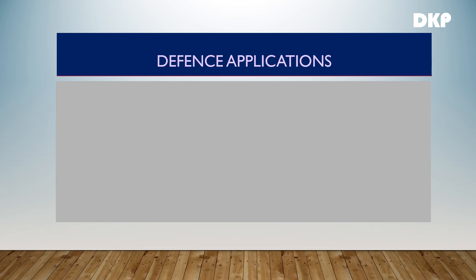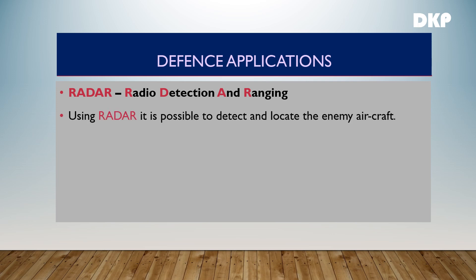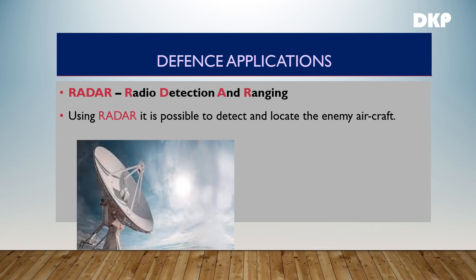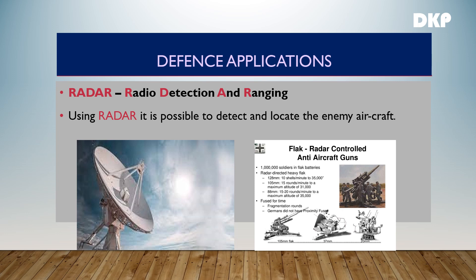Coming to the defense applications — radar is mainly invented for defense applications. The full form of radar is Radio Detection And Ranging. Radar can be used to detect and locate enemy aircraft: the radar sends a signal to the enemy aircraft, and the aircraft sends an echo signal back to the radar, detecting its presence and location. The radar and aircraft guns can be linked by an automatic control system to form a single unit, and guided missiles are completely controlled by electronic circuits.